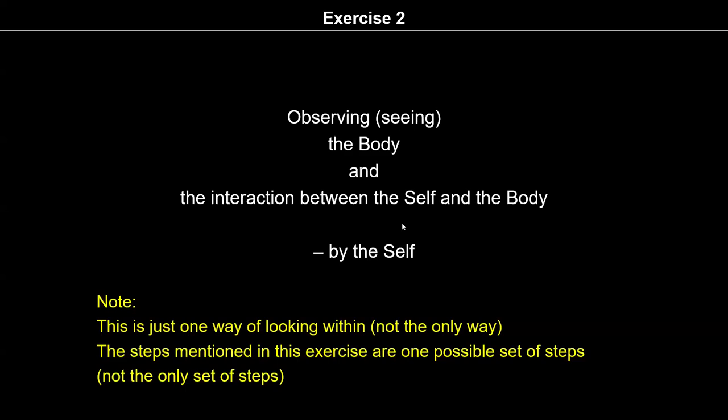In Exercise 2, we are trying to observe the body and the interaction between the self and the body, by the self. In Exercise 1, we observed the self by the self. So when we are doing Exercise 2, Exercise 1 is in the background. In Exercise 1, we observe our self-consciousness with the help of 7 steps. When we say observation, it means we are directly observing it.